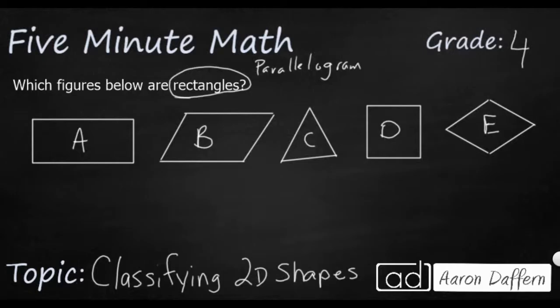And parallelograms are four-sided shapes, or they're quadrilaterals that have two pairs of parallel lines. And they're special types of parallelograms. They're parallelograms that have four right angles, or think of them as four square corners. So that's what makes something a rectangle. It's got two pairs of parallel lines, and it's got four right angles.